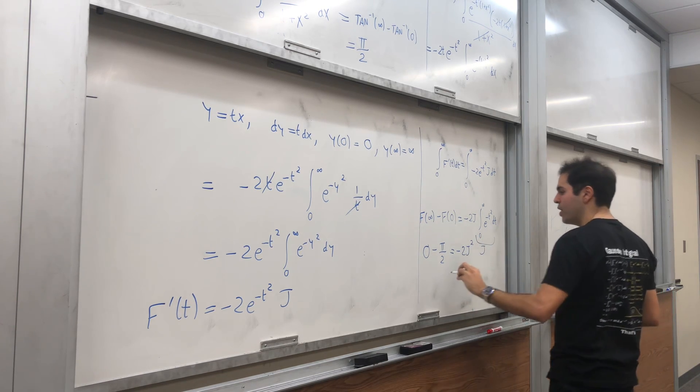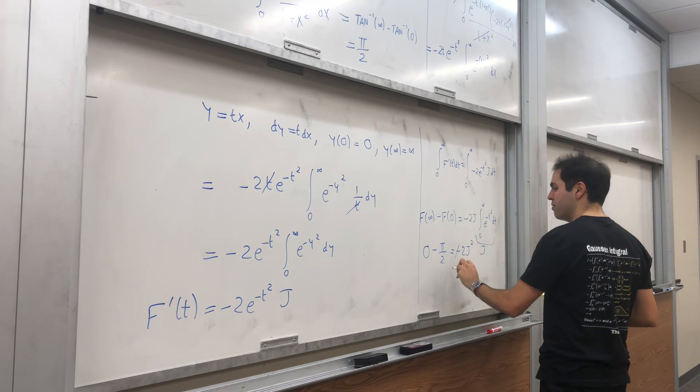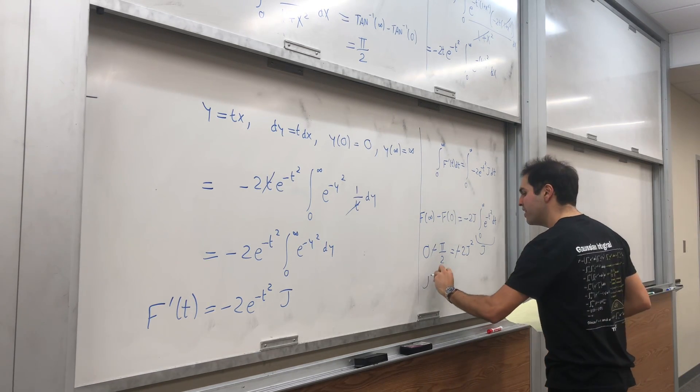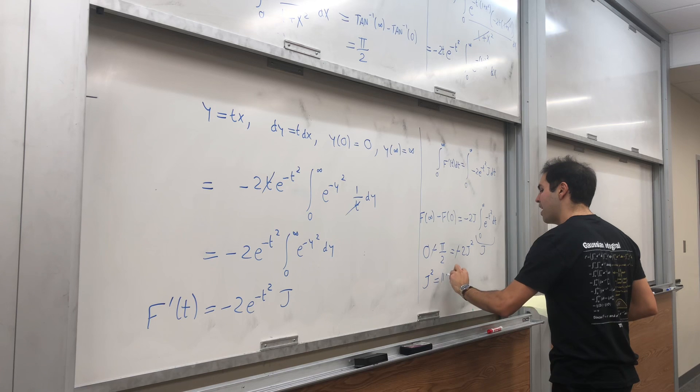And so zero minus pi over two equals to minus two J times J, so minus two J squared. And so in particular, the minuses disappear. You divide by two, and you get J squared equals to pi over four.